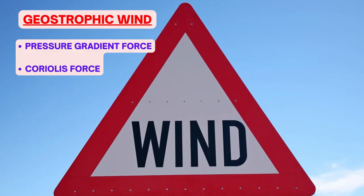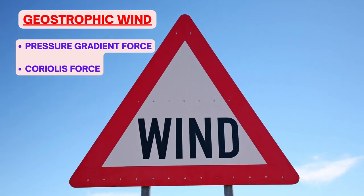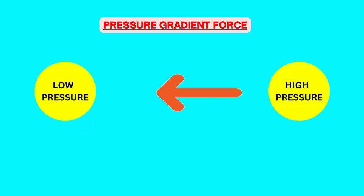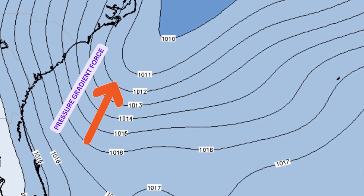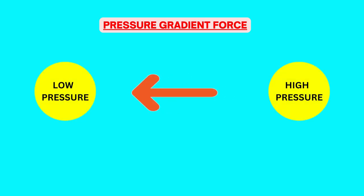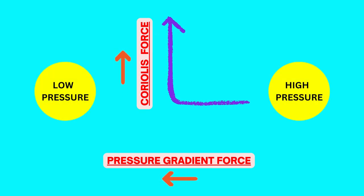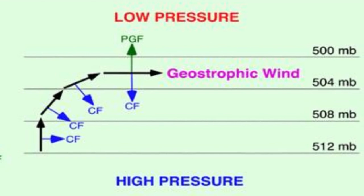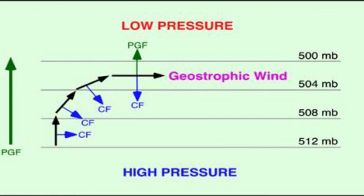Geostrophic wind is modeled considering the situation when only pressure gradient force and Coriolis force are present. Pressure gradient force is created due to pressure difference between two places or areas. So closer the spacing between two isobars, higher the pressure difference and higher the pressure gradient force, and stronger will be the wind speed. Wind starts blowing from high to low pressure area, but within 24 hours under the influence of Coriolis force it starts curving to the right in the northern hemisphere and to the left in the southern hemisphere, and finally it gets parallel to isobars. Pressure gradient force and Coriolis force balance each other out, and wind direction is straight and parallel along parallel isobars.